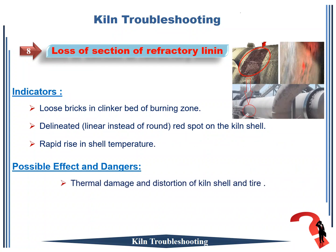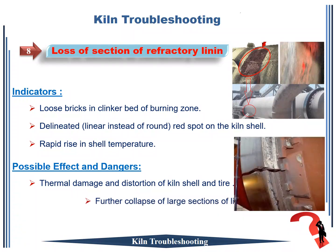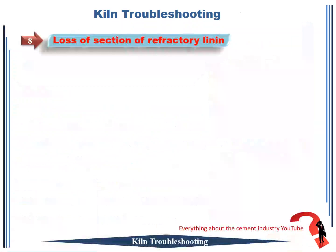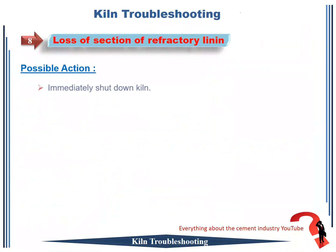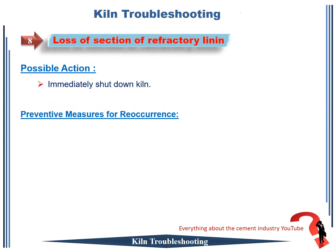Firstly, thermal damage and distortion of kiln shell and tire. Secondly, further collapse of large sections of linings. Therefore, the important action to take immediately is to immediately shut down the kiln. Possible measures to prevent reoccurrence.